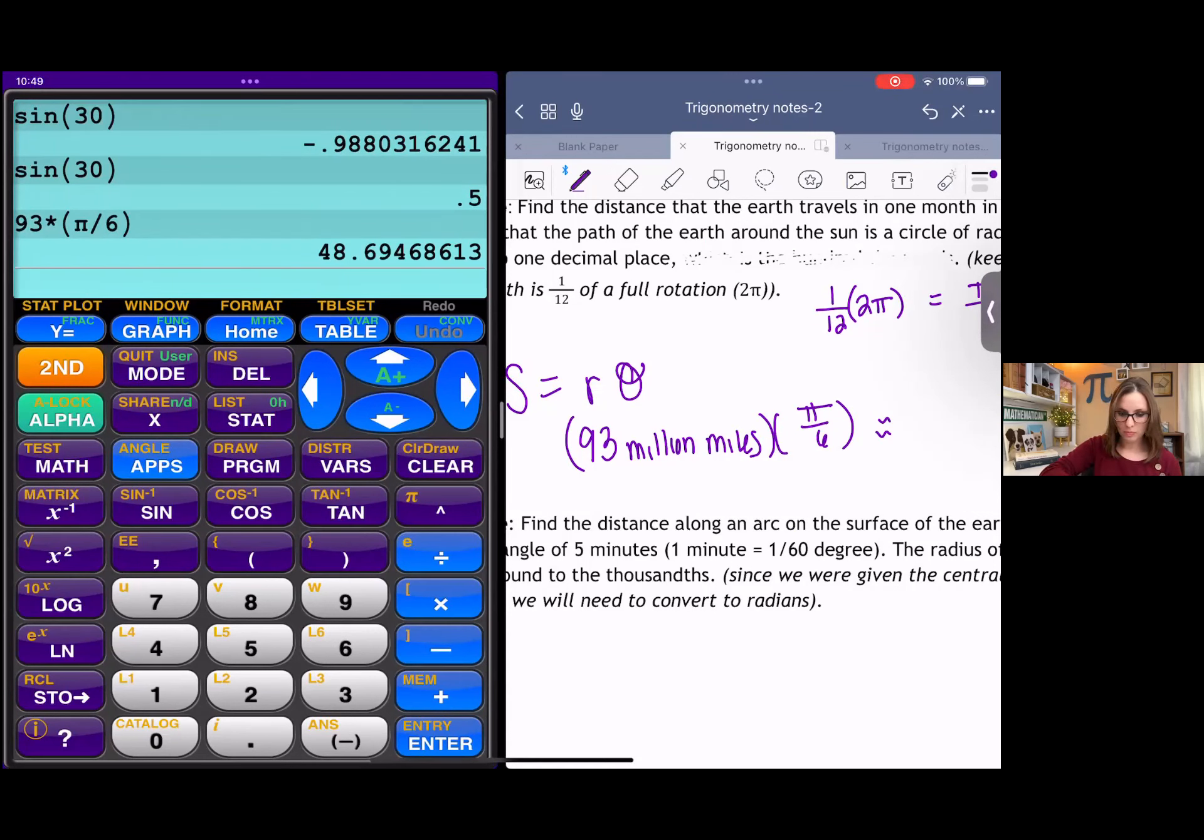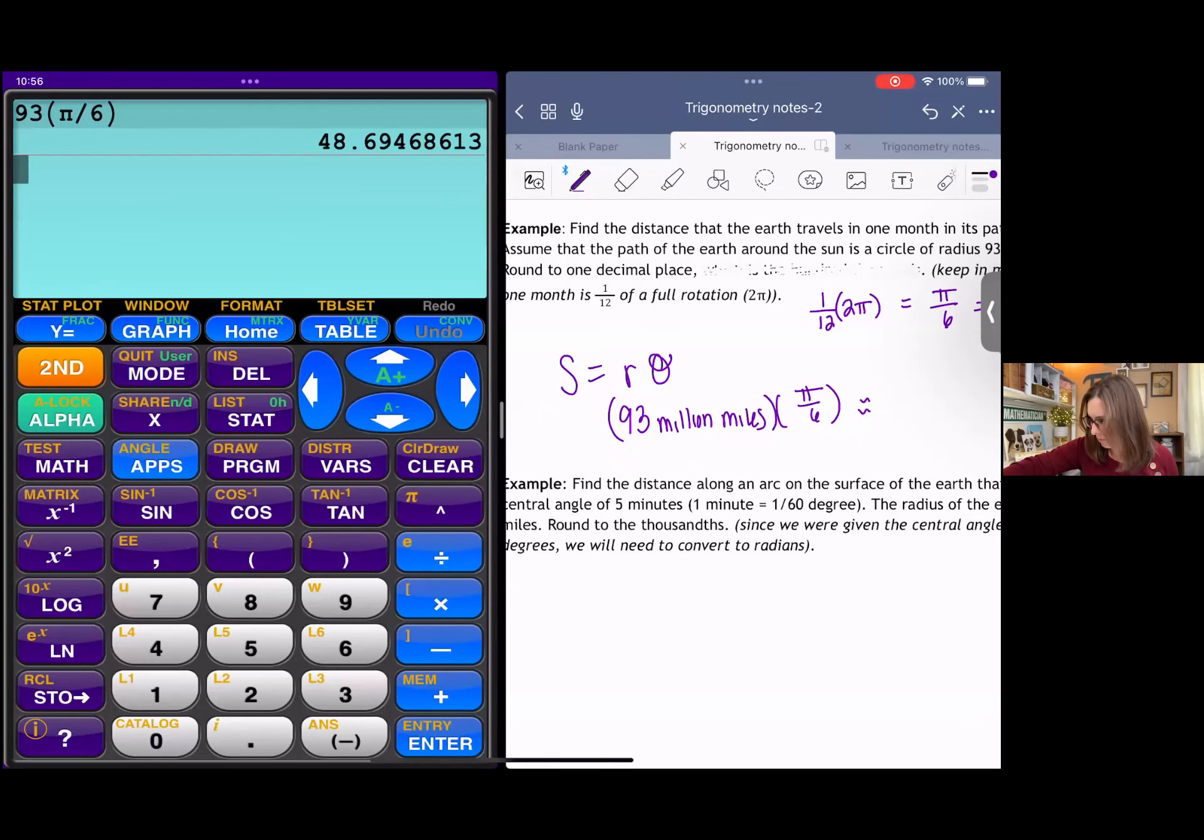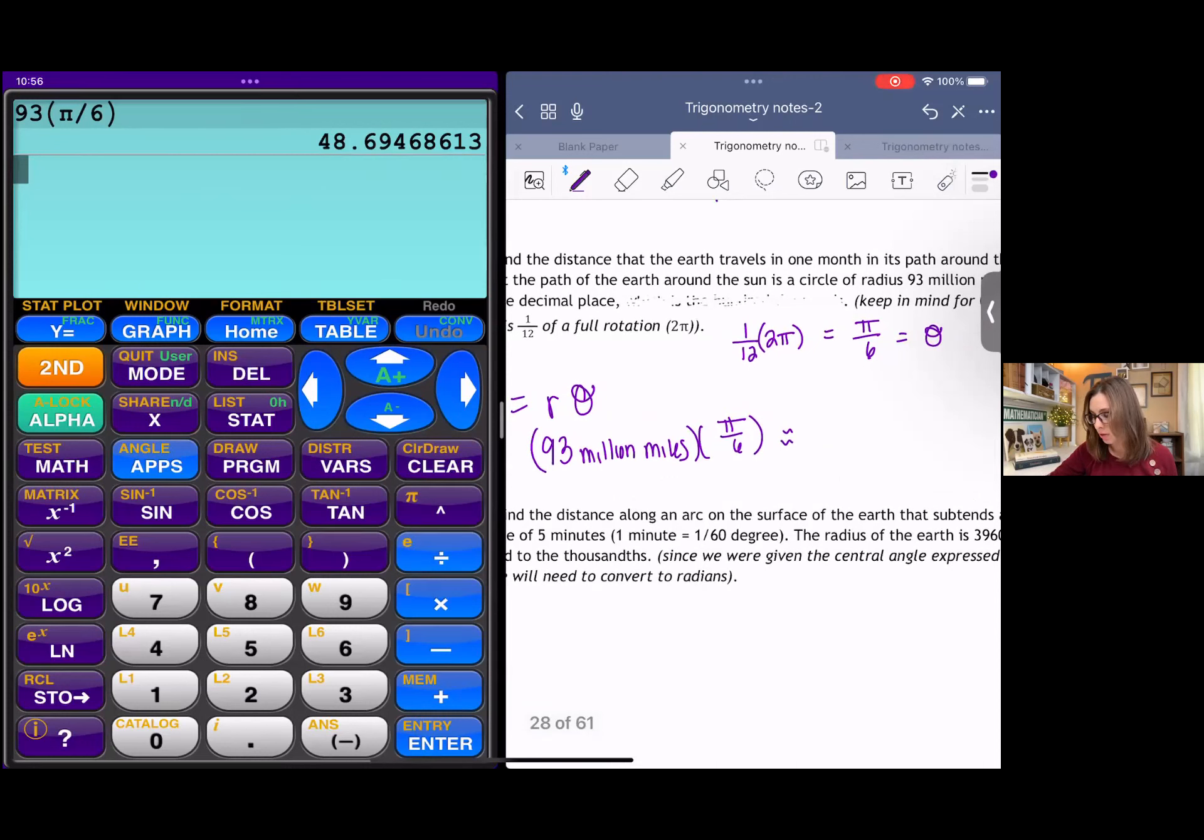I'm just going to do 93 times pi over six. So 93 million miles times pi over six is about 48.7 million miles. And that's all.